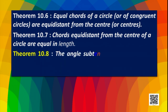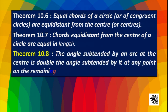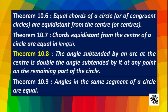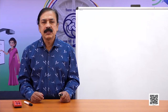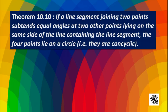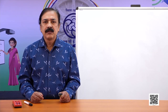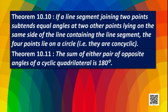The next theorem: the angle subtended by an arc at the center is double the angle subtended by it at any point on the remaining part of the circle. Angles in the same segment of a circle are equal, and its converse: if a line segment joining two points subtends equal angles at two other points on the same side of the line, the four points lie on a circle — that is, they are concyclic. The sum of either pair of opposite angles of a cyclic quadrilateral is 180 degrees.